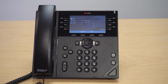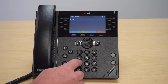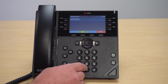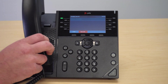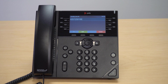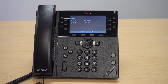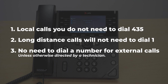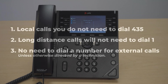There are a few ways you can place a call. You first will dial the number then pick up the handset or press the speaker button depending on your desired method of audio. You can dial an extension in the same manner. For local calls you do not need to dial the area code first, and for long-distance calls you will not need to dial a one. On some old phone systems you had to dial a digit such as nine before the number for external calls — that is no longer necessary unless otherwise directed by a technician.